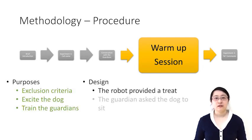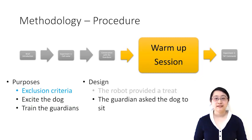In our study, we included two tasks. First, the robot providing treats to a dog. This serves all three purposes. Second, the guardians gave the sit commands. This is mainly used as an exclusion criteria to ensure the dog understands the verbal command, sit.